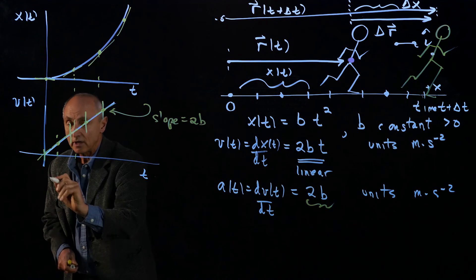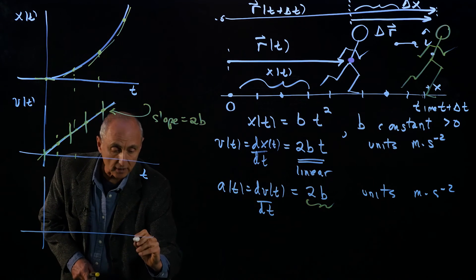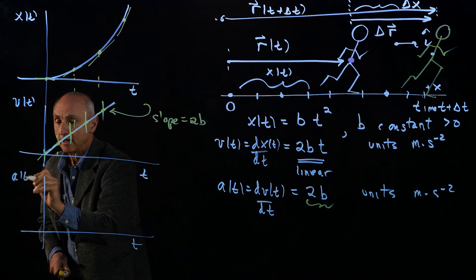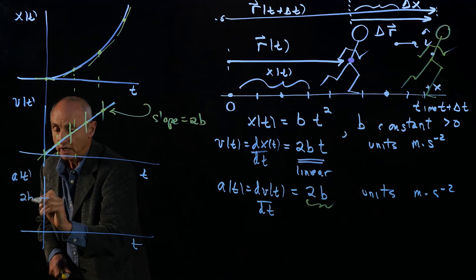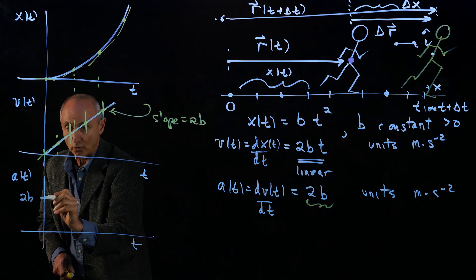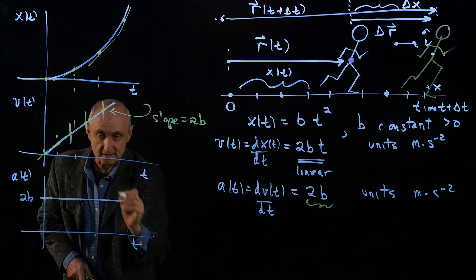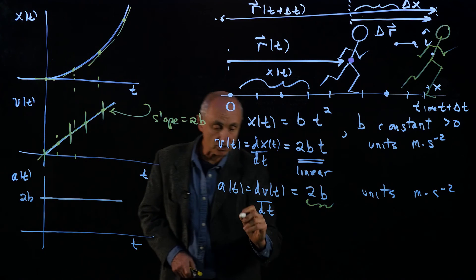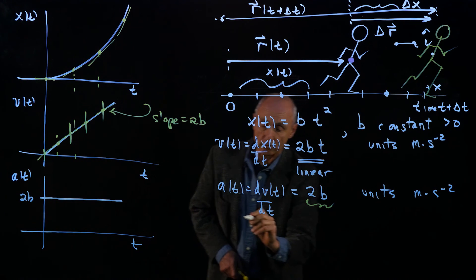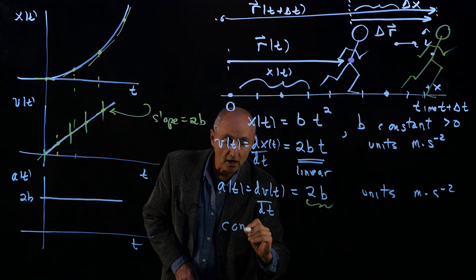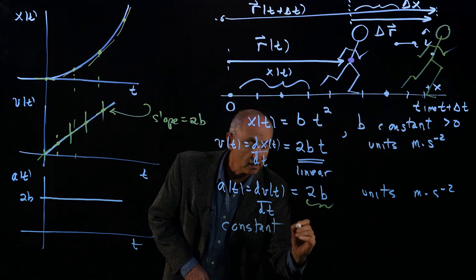And so now, if we plotted our acceleration function, we have this point, 2b. And every single point has the same value of acceleration. So here, the acceleration is an example of constant acceleration.